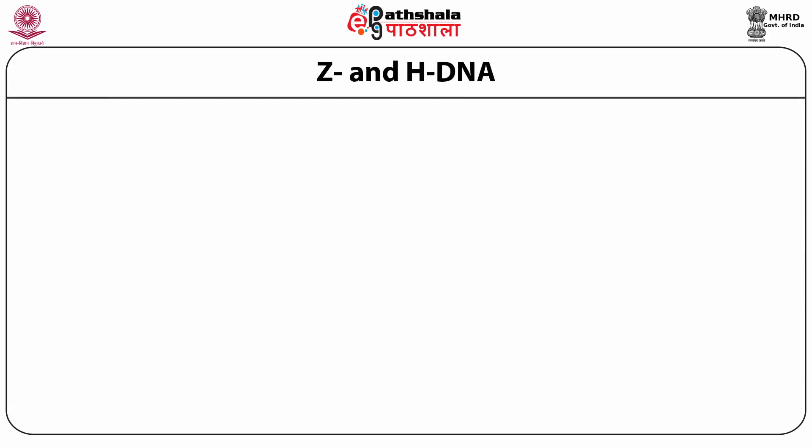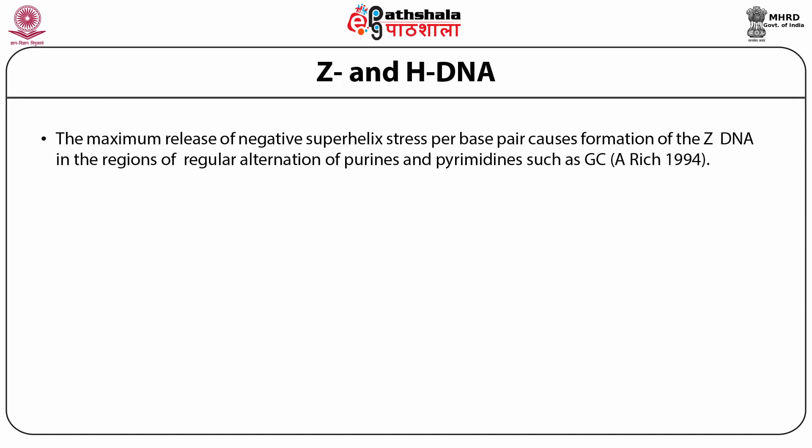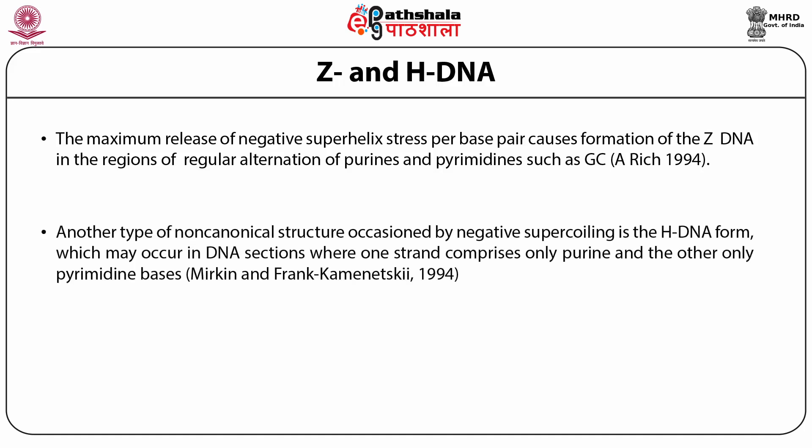G and H forms of DNA: the maximum release of negative superhelix stress per base pair causes formation of Z-DNA in regions of regular alternation of purines and pyrimidines such as GC. This was observed by Nobel laureate Alexander Rich in 1994. Another type of non-canonical structure occasioned by negative supercoiling is the H-DNA form, which may occur in DNA sections where one strand comprises only purines and the other only pyrimidines.